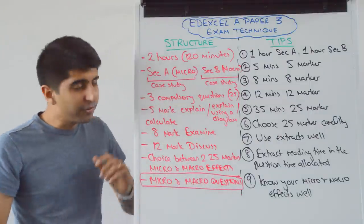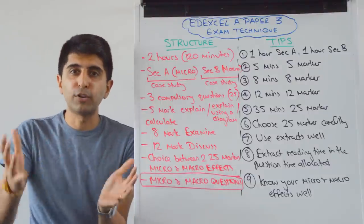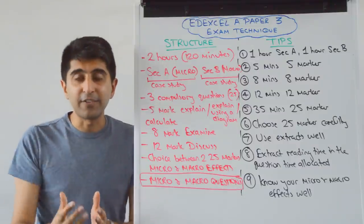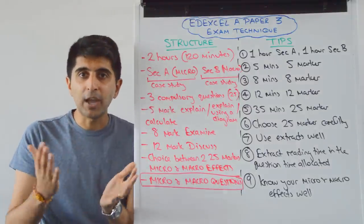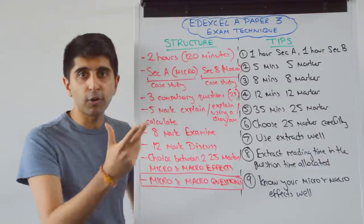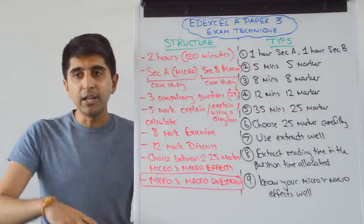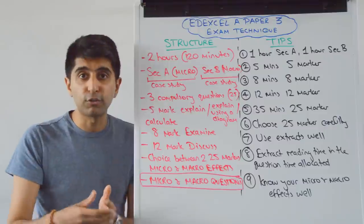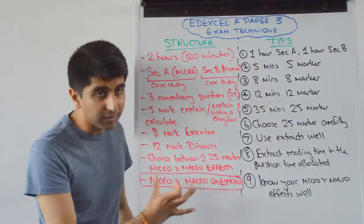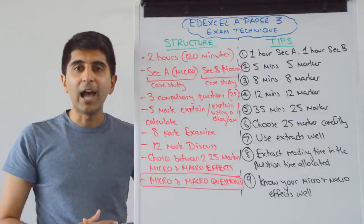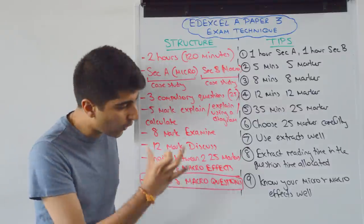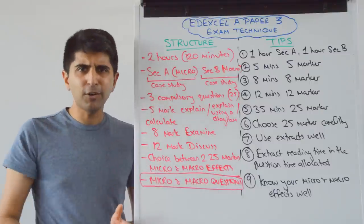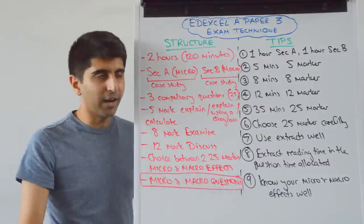Even though the extract material might signal that this is a micro-focused or macro-focused section, the questions might be different. So even though the case study is about the UK energy industry, there might be a macro-question thrown in there. If the extract material seems macro-focused, you might get a micro-question. Don't let that surprise you — that's just the nature of Paper 3. It's both a micro and a macro-based paper, so you need to know everything in micro and macro.